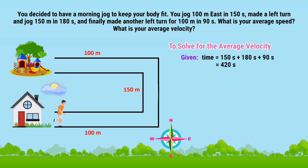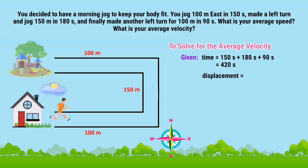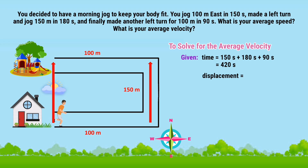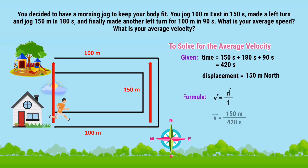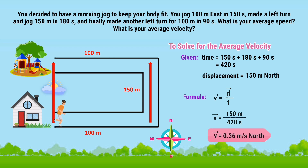To solve for the average velocity, we need to determine first the displacement. If we look closely at the illustration, we know that the shortest distance from the initial and final positions goes this way, which is parallel to this side. Therefore, we assume that the displacement is also equal to 150 meters and the direction is going north. So, average velocity equals 150 meters north divided by 420 seconds. The result is 0.36 meters per second going north.